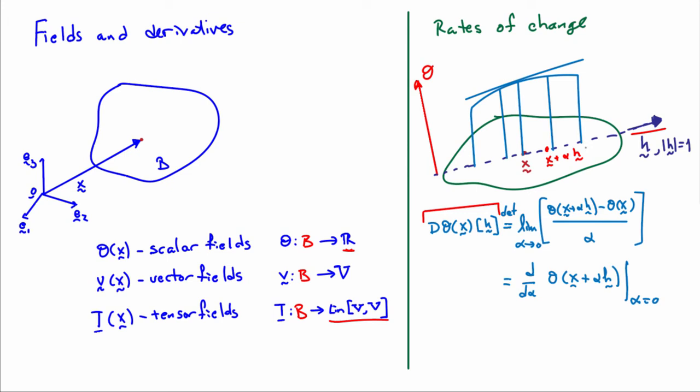You can expand this out and manipulate it a little bit. And you can find out that this expression can be written as the derivative of theta evaluated at x plus alpha h, taking the derivative with respect to alpha, just a scalar, and then setting alpha equal to zero. And so this relationship here is really a very nice operational definition for the directional derivative because it allows you to very easily calculate the directional derivative.